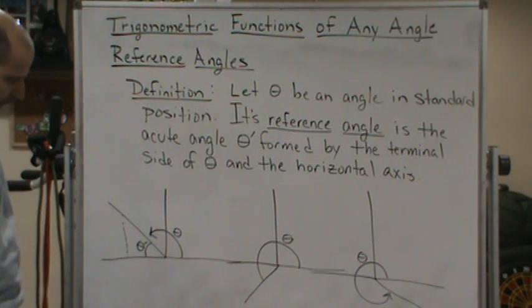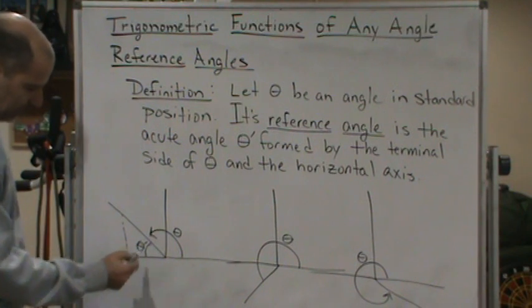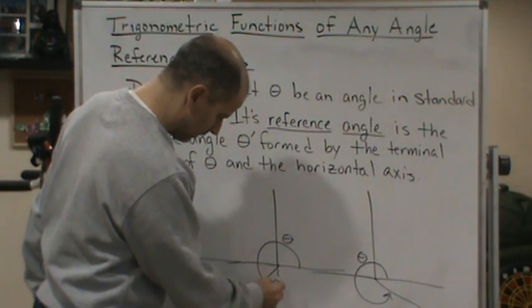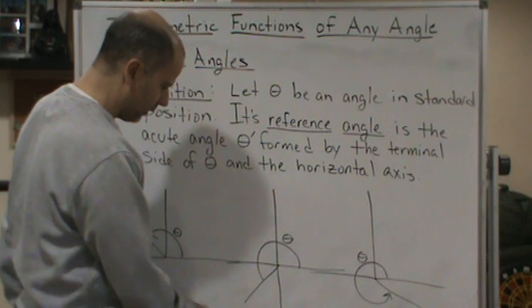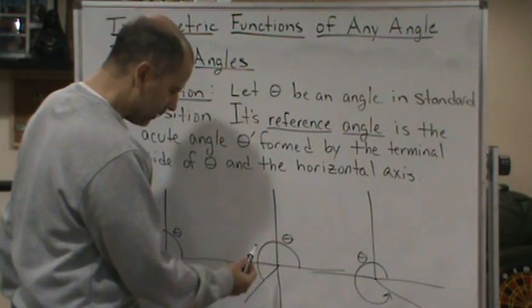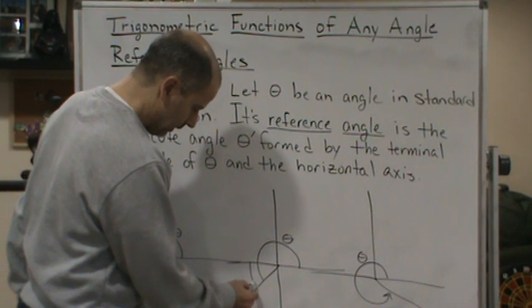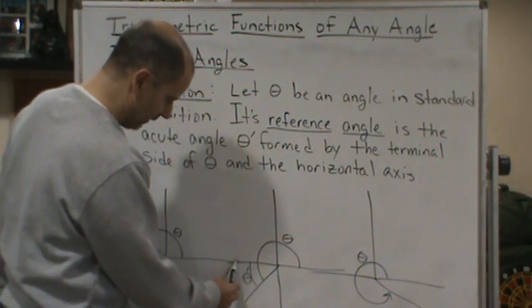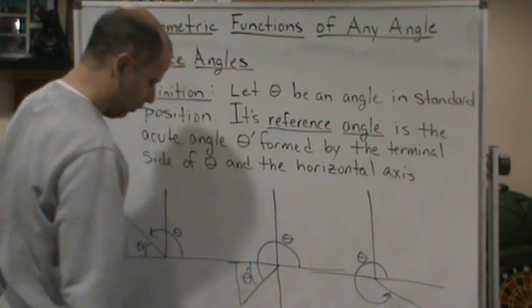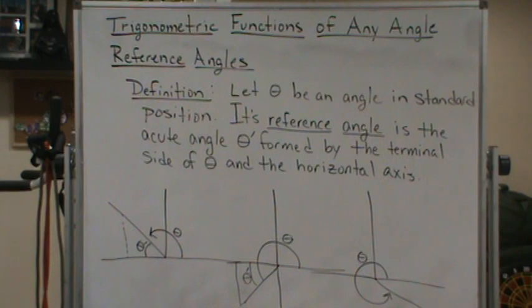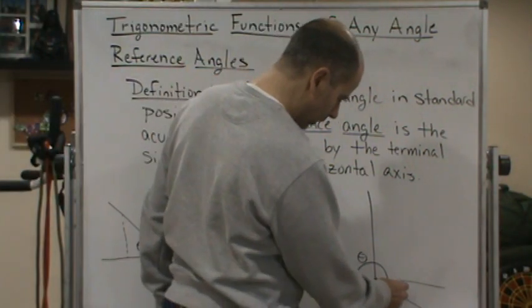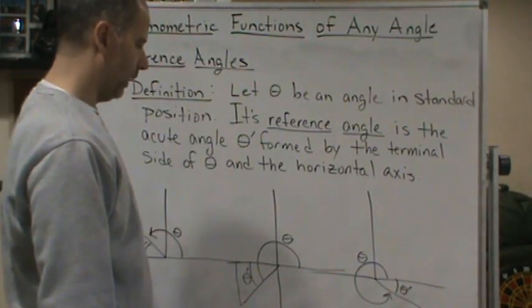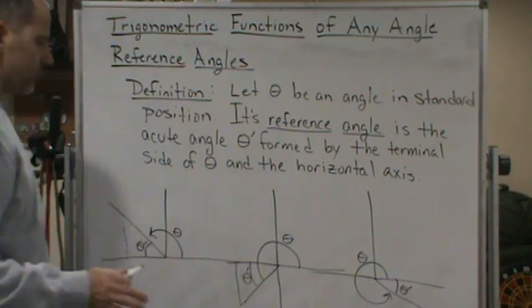Think of a right triangle - this is the reference angle θ'. In the third quadrant, let's draw this here. The reference angle θ' is going to be this one because you can form a right triangle with the horizontal axis right there. Finally, in the fourth quadrant, this angle here would be θ'. Those are the reference angles.